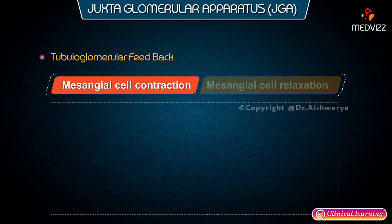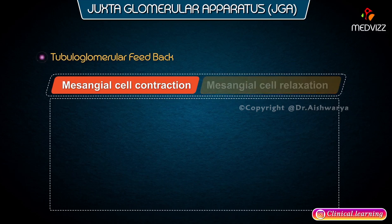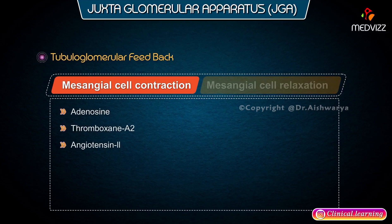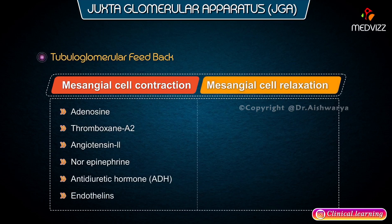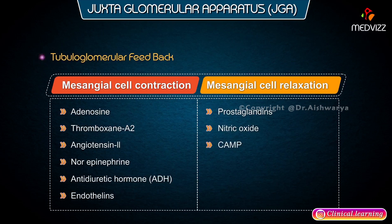Under mesangial cell contraction, the mediators include adenosine, thromboxane A2, angiotensin 2, norepinephrine, antidiuretic hormone, and endothelins. For mesangial cell relaxation, the mediators include prostaglandins, nitric oxide, cyclic AMP, dopamine, and atrial natriuretic peptide.